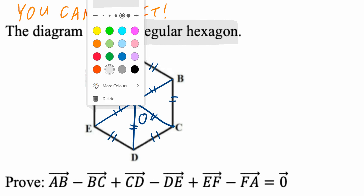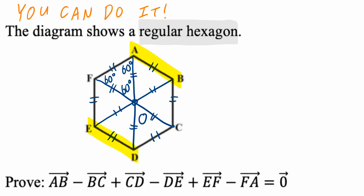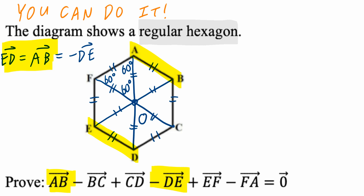Now, looking at vectors AB, ED, and negative DE: vector AB equals vector ED, which equals negative vector DE. These are equal vectors because they have the same magnitude and the same direction. Negative vector DE equals vector ED, which equals vector AB. This will be super useful in a moment.